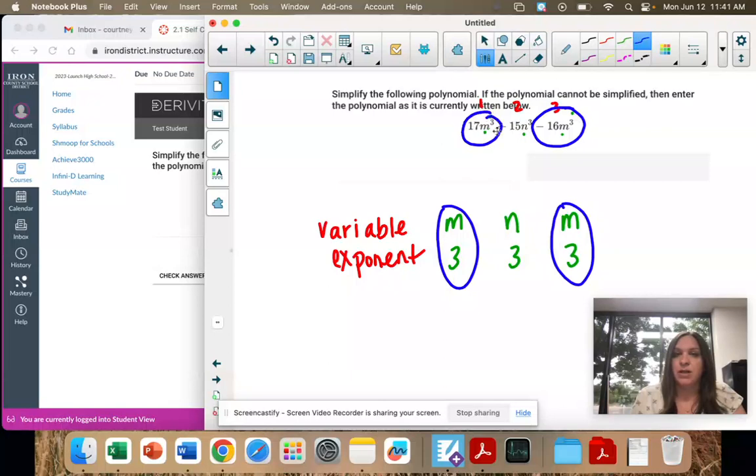So I'm combining 17m to the third minus 16m to the third. And then our last one, the plus 15m to the third, that's going to be just leave as is after we combine this.